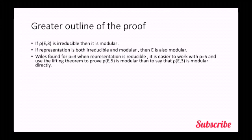Wiles found that for prime equals to 3, when representation is reducible, it is easier to work with p equals to 5 and use the lifting theorem to prove that rho e5 is modular than to directly show that rho e3 is modular.